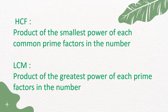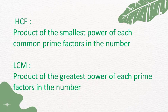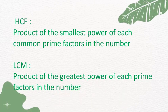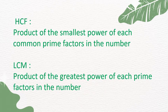HCF means the product of the smallest power of each common prime factor in the numbers. LCM means the product of the greatest power of each prime factor in the numbers.